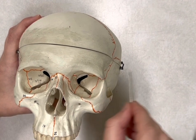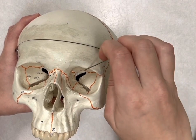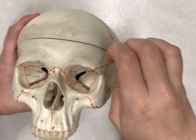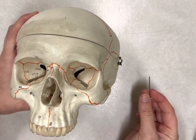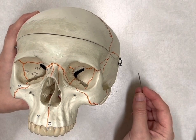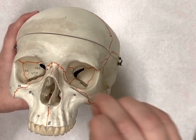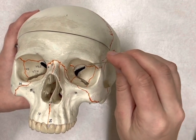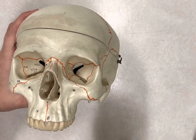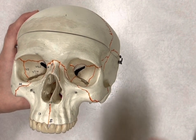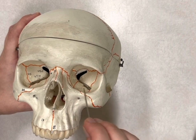Then if we go kind of laterally, we have our supraorbital margin. Supra means above, orbital referring to the eyes, and margin referring to the length of this area. So this is going to be your supraorbital margin. That being said, when you have a supra you're usually going to have an infra as well, which means below. So this is your infraorbital margin.